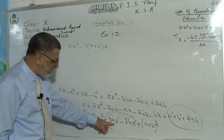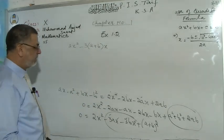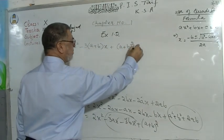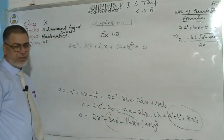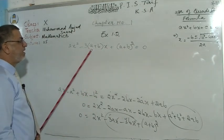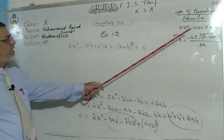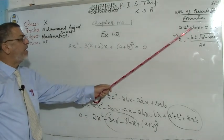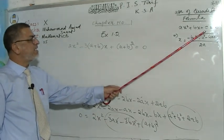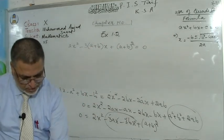Because we already have small a and b in our equation, and the formula also uses small a, b, c, we will use capital A, B, C to make a distinction. So capital A = 2, capital B = −3(a+b), and capital C = (a+b)². This way there is a clear difference between the given values and the formula.